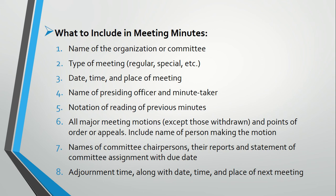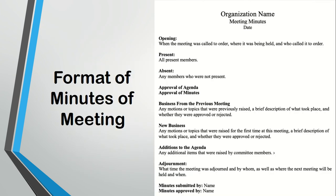The final item to include is adjournment time — kis waqt meeting khatam hui — along with the date, time and place of the next meeting. Agar next meeting schedule ki gayi hai to woh bhi at the end of the meeting mention kia jayega. Here is a general format of minutes of meeting — is ka record printed form mein ho sakta hai, aur minute taker apni sahulat ke liye is ko apne andaz mein set bhi kar sakti hain. Yeh general tariqa hai.